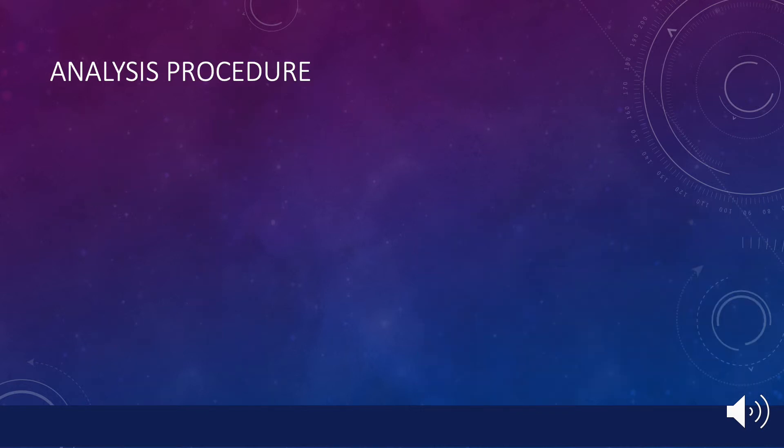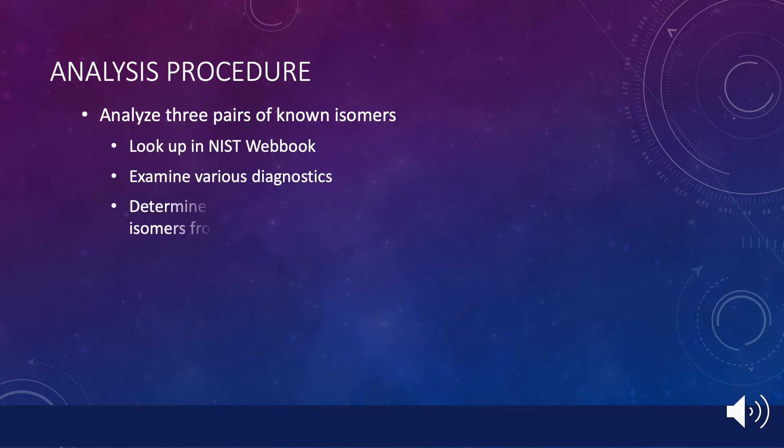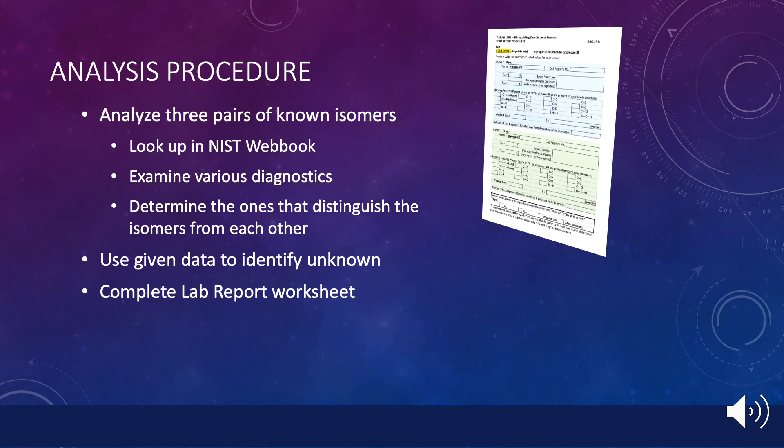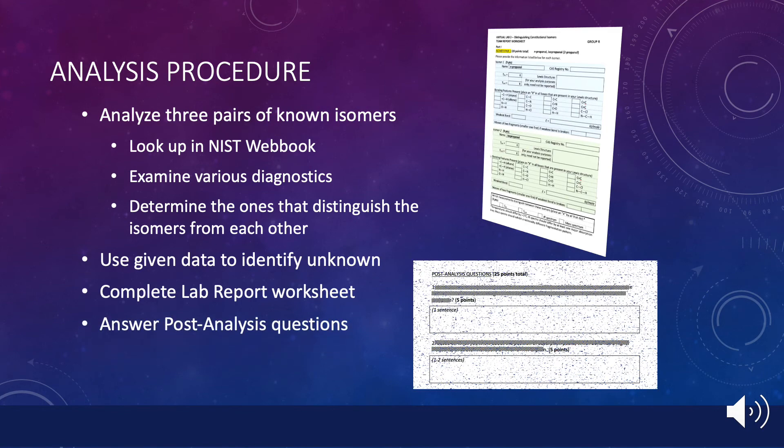As before, your analysis procedure is spelled out in the lab background and instructions document. It includes analyzing three pairs of isomers using information gathered from the NIST webbook site, examining various experimental measurements, and determining which diagnostics help to distinguish between the two isomers. You will then use a set of input data to unambiguously identify an unknown that has two or more isomers. Your analysis should be recorded by completing the information requested on the Lab 2 report worksheet and answering the post-analysis questions.